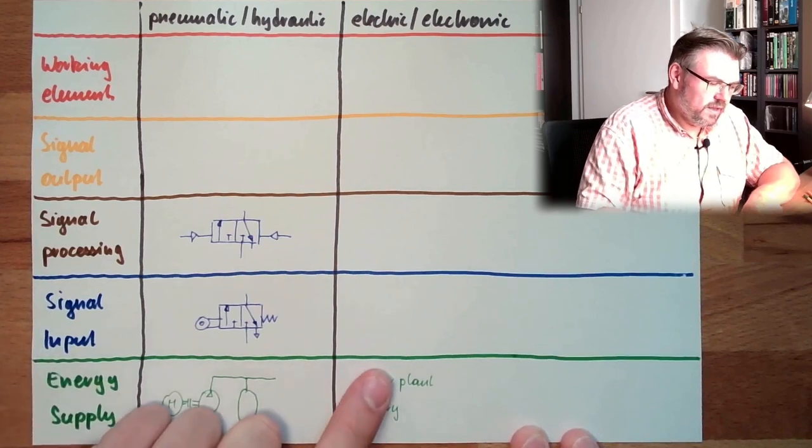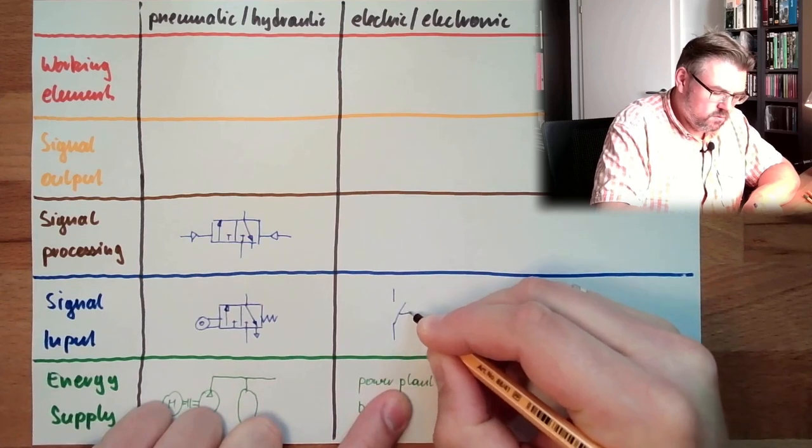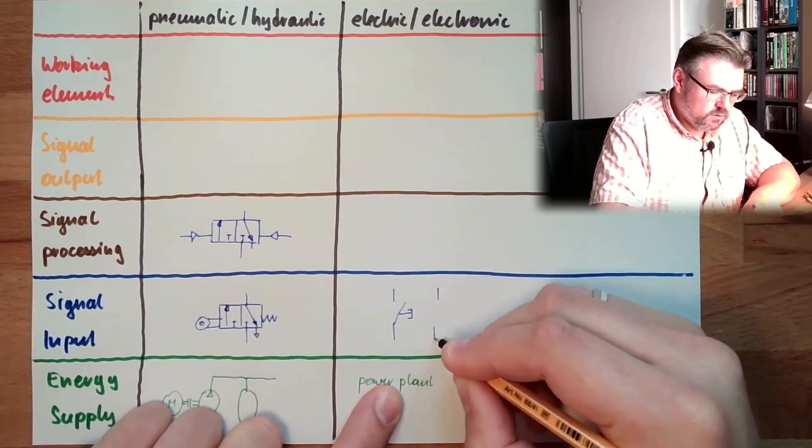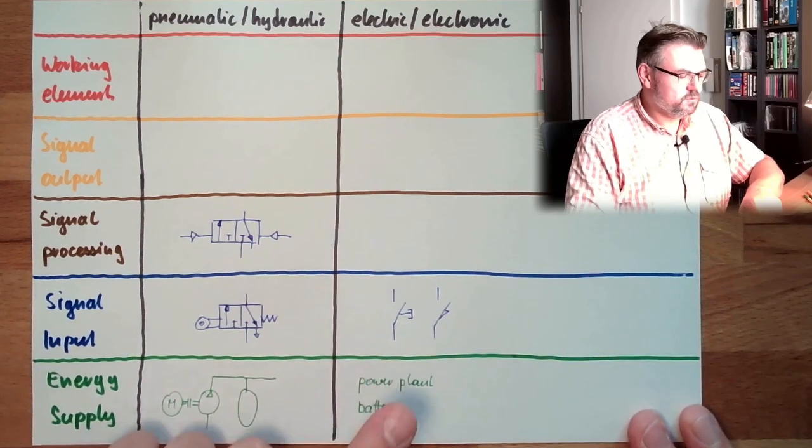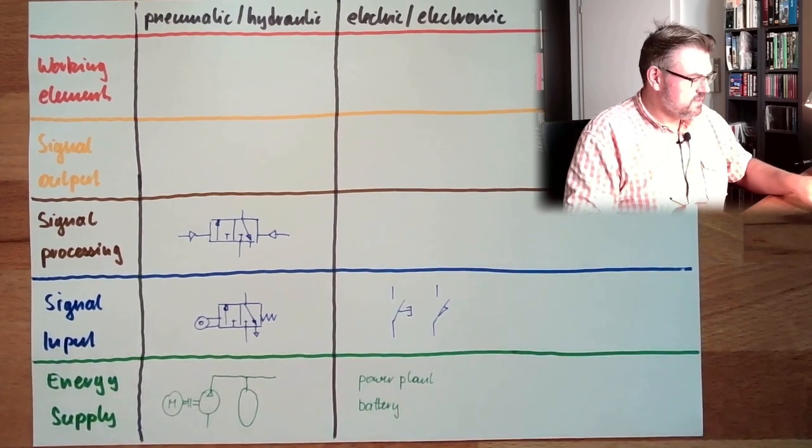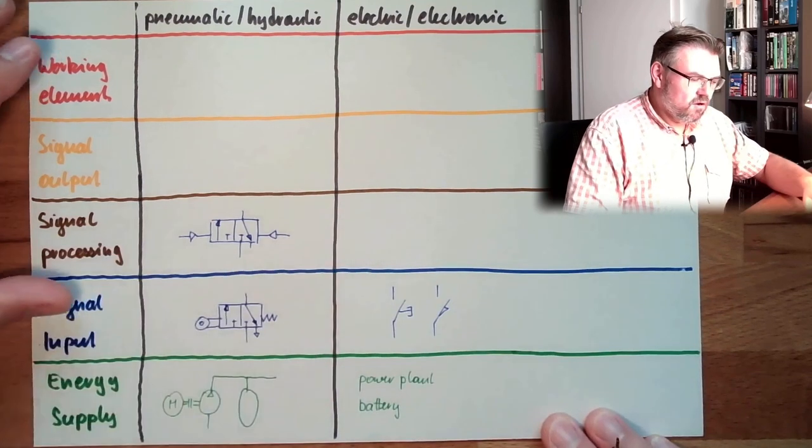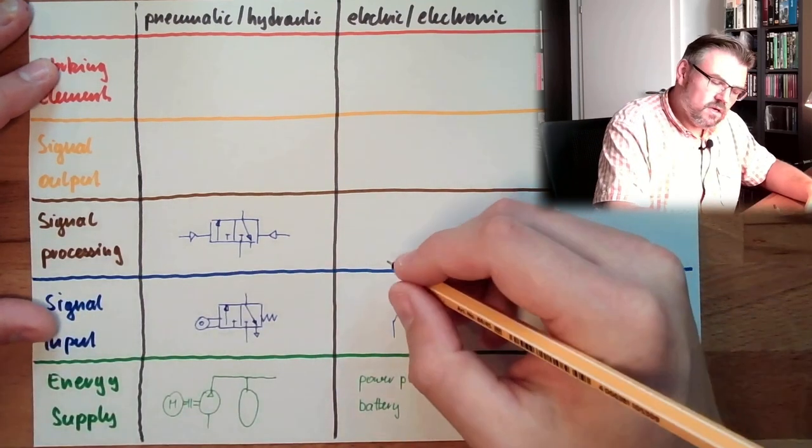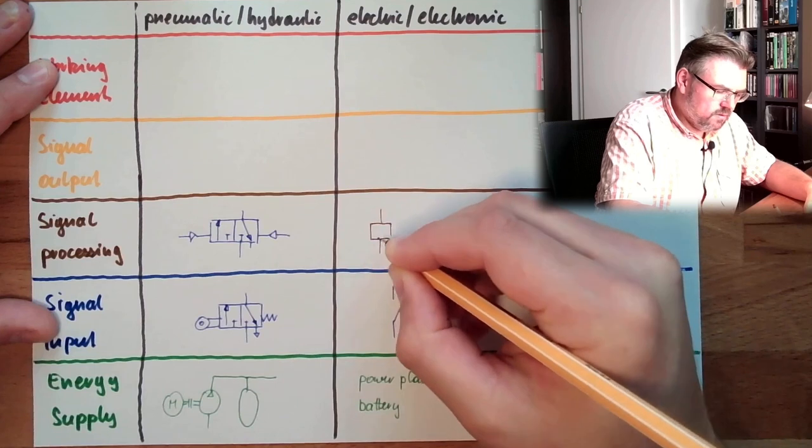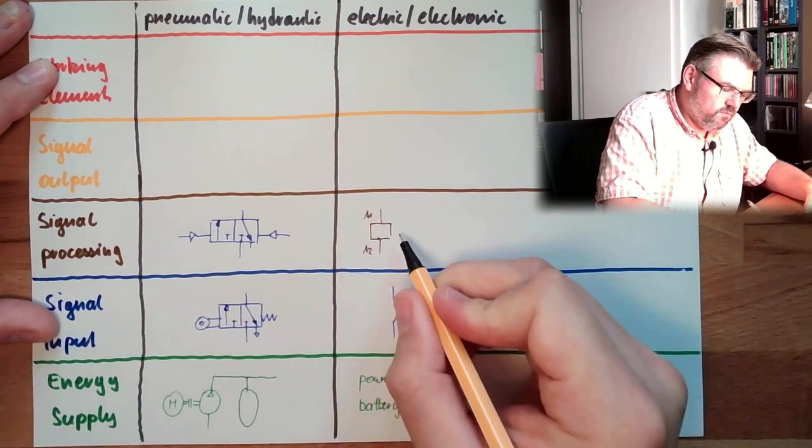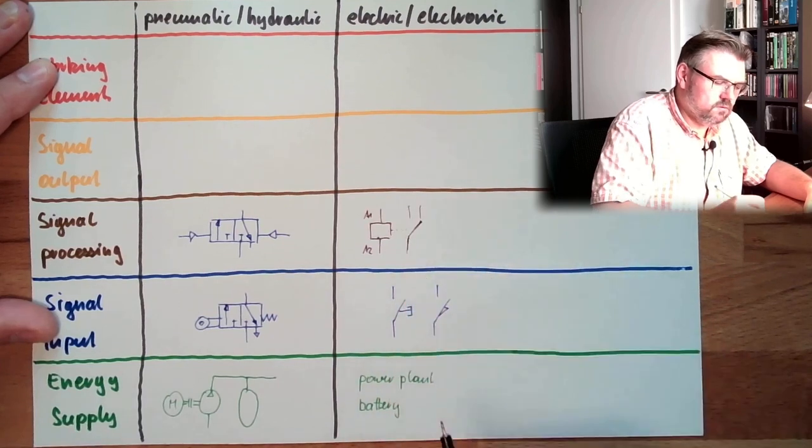Signal input on the electric, electronic side is of course a switch. Or a switch operated by lever or something like this, limit switch, something like this. Signal processing, now I'm using the right color. Signal processing of electric or electronic components is of course a relay. This is operated by some voltage and is switching some contacts, alright? Relay, typical processing element.